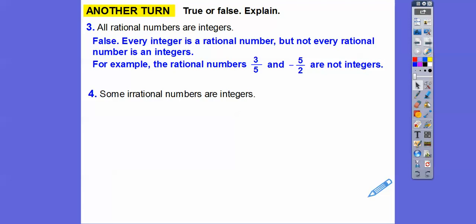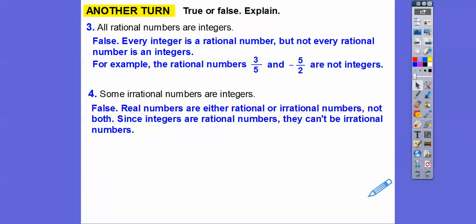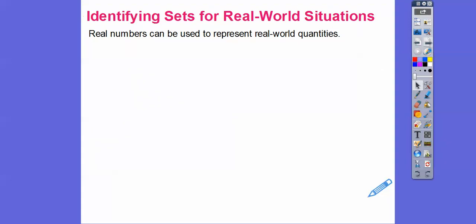How about this — some irrational numbers are integers. Well, remember, they can't be irrational and rational, and all integers are rationals. So this one has to be false. Real numbers are either rational or irrational numbers — they can't be both. Since all integers are rational numbers, they can't be irrational numbers.